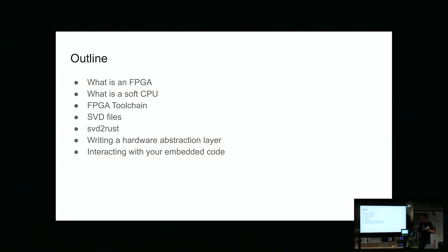A quick outline of what I'm going to cover: I'm going to talk about what an FPGA is, what a soft CPU is, the FPGA toolchain I've been using which is an open source toolchain, SVD files and SVD to Rust, writing a hardware abstraction layer, and then interacting with your embedded code.